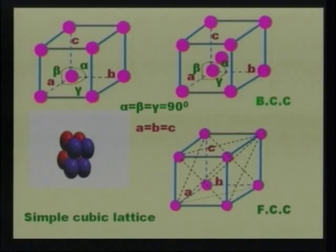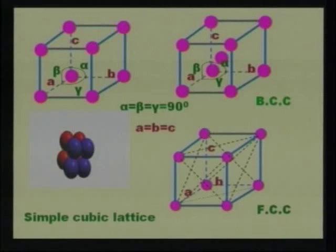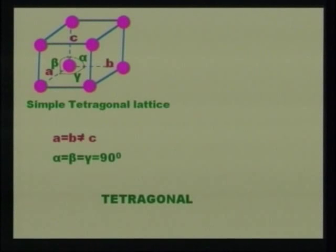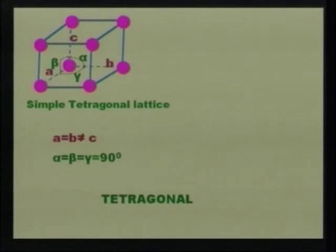In the face centered cubic (FCC) lattice, all six faces have atoms arranged on them, in addition to atoms at the corners. The simple tetragonal lattice has A = B but B ≠ C and C ≠ A, with angles between all axes equal to 90 degrees. However, this type of lattice does not exist in most metallic structures.